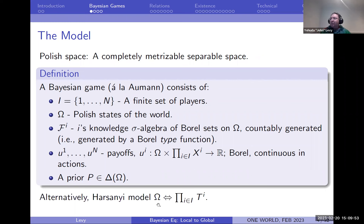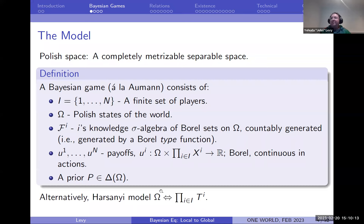An alternative presentation uses type spaces for each player, and you can go back and forth between those models up to some measurability details by saying the states of the world are the product of the type spaces. The information a player would know in that case is his own type, and phi_i would be the sigma-algebra generated by projection onto player i's coordinate.